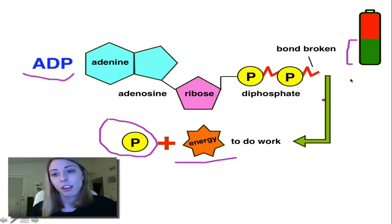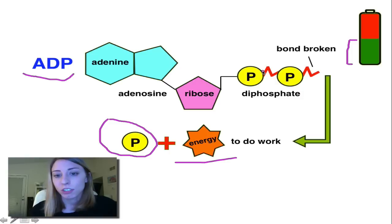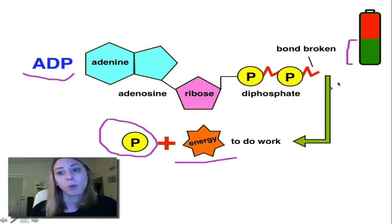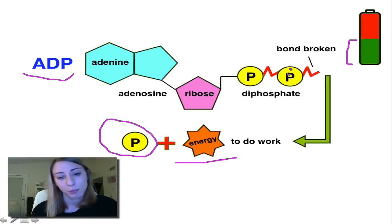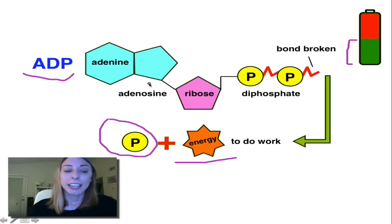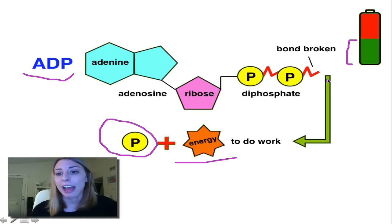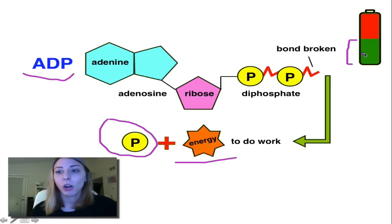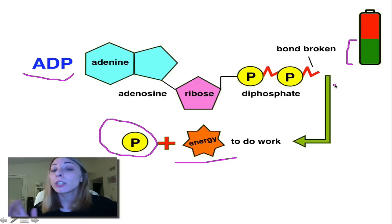There isn't energy right here in this bond anymore. Of course there's still energy all around the molecule in bonds, but we only use the energy in this last bond. So because it's ADP, we're not going to use that to fund reactions in the body — that's why it's half charged. We need to get it back to its fully charged state, which is ATP.